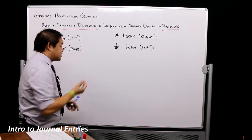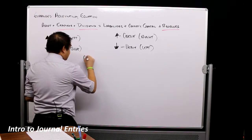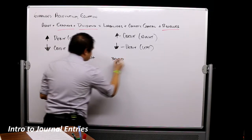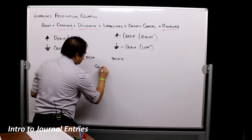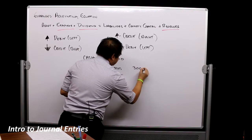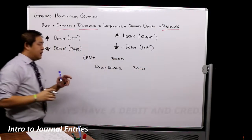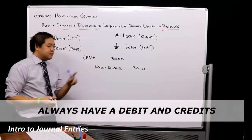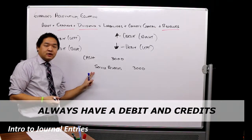So I gave you an example of cash and service revenue. So cash 3,000, service revenues 3,000. That's a journal entry. Now journal entry always has a debit and credit, debit, credit.